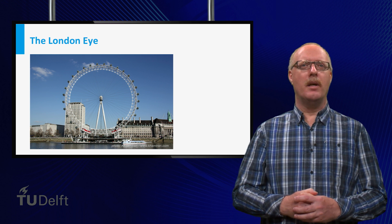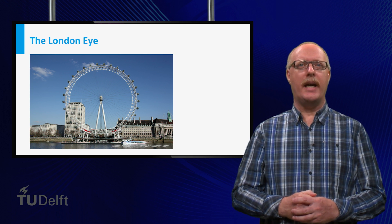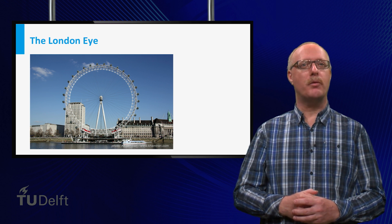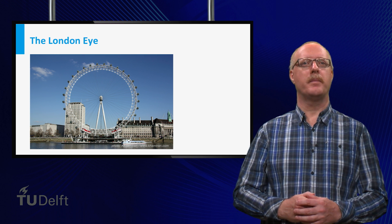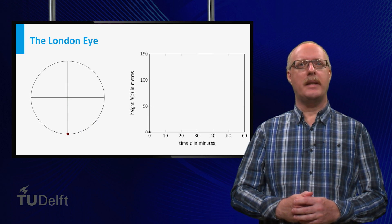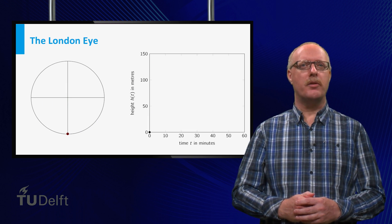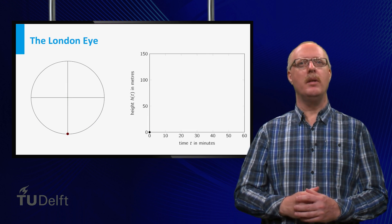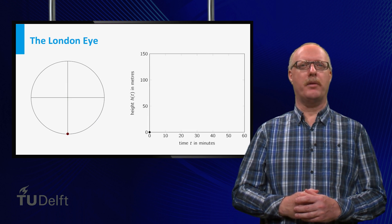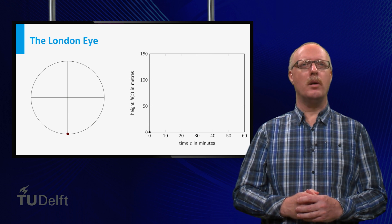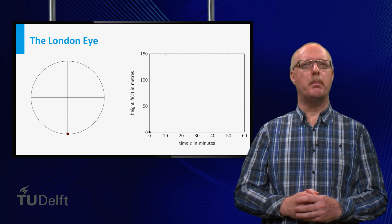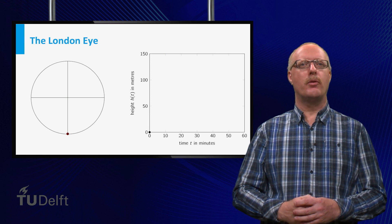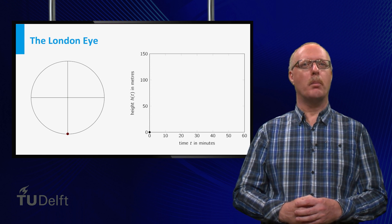The height of a cabin of the London Eye as a function of time can be described by means of trigonometric functions. Let us assume that at time t is zero, a cabin is in its lowest position, so that people are able to enter. Furthermore, we assume that the big wheel turns at a constant speed, and that it takes 30 minutes for a complete tour.